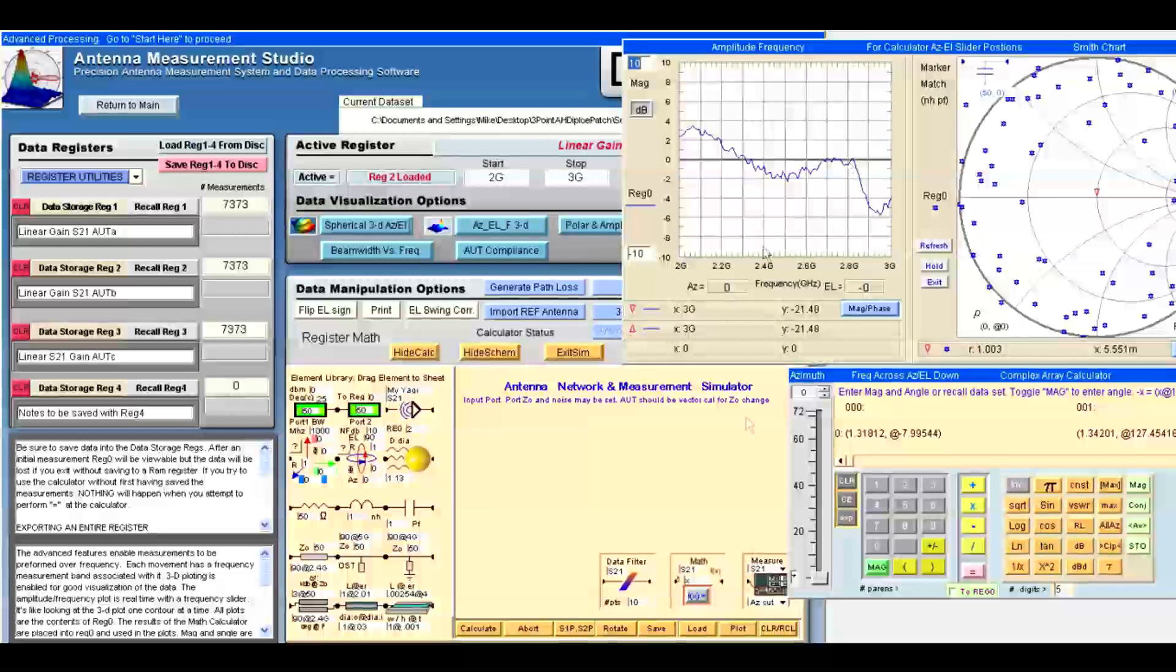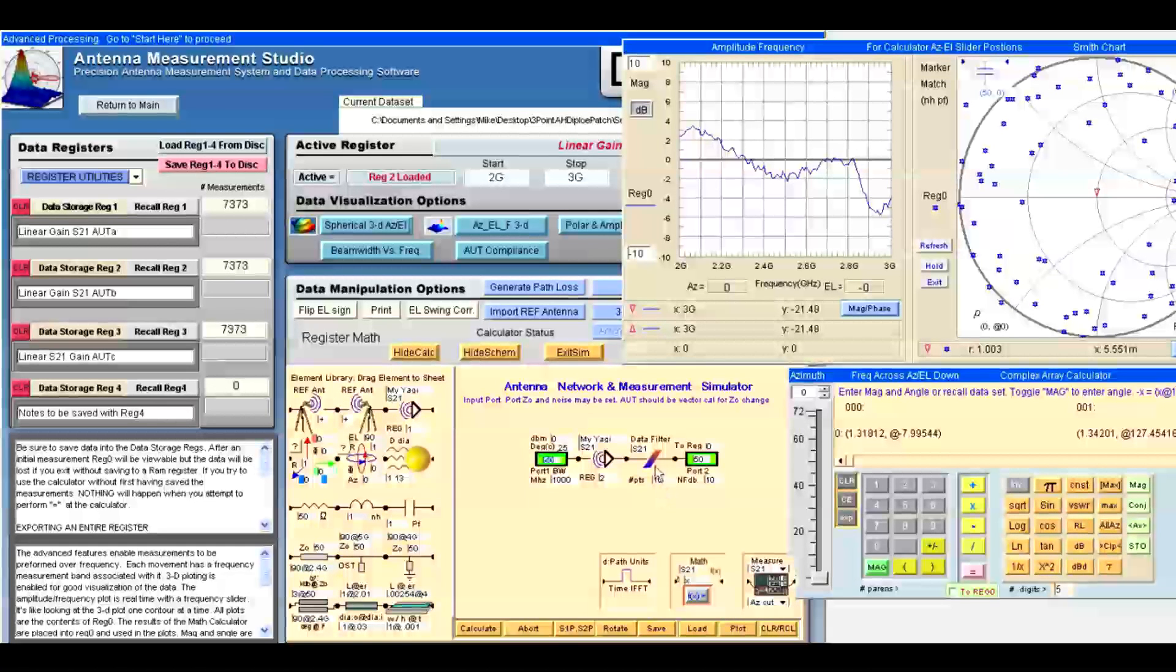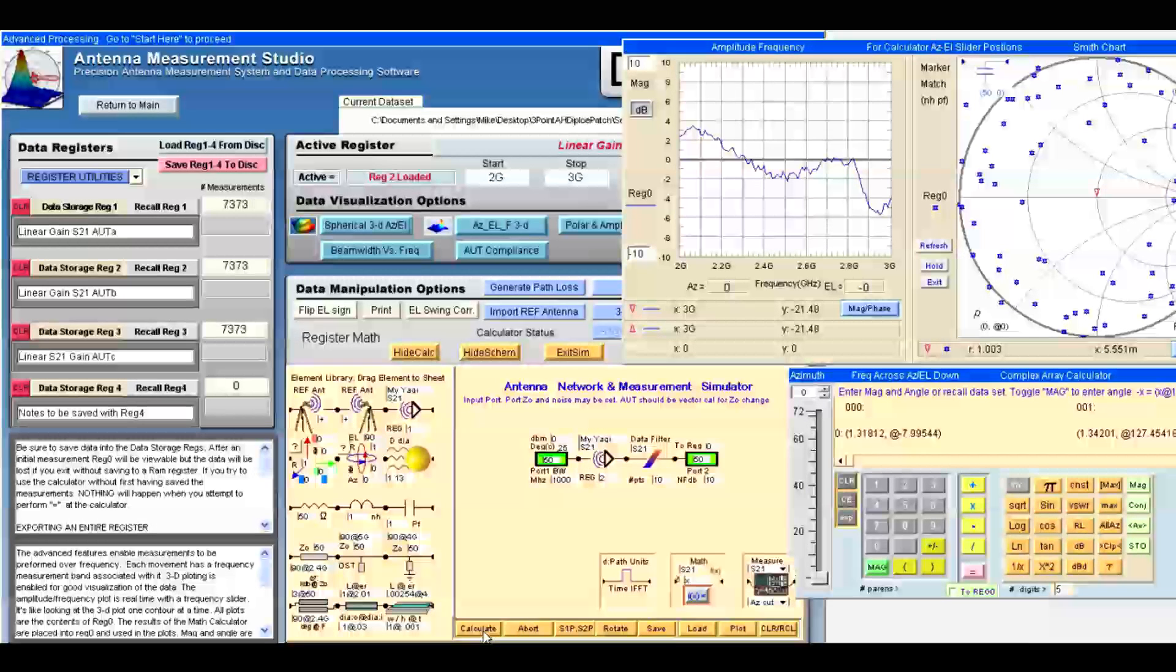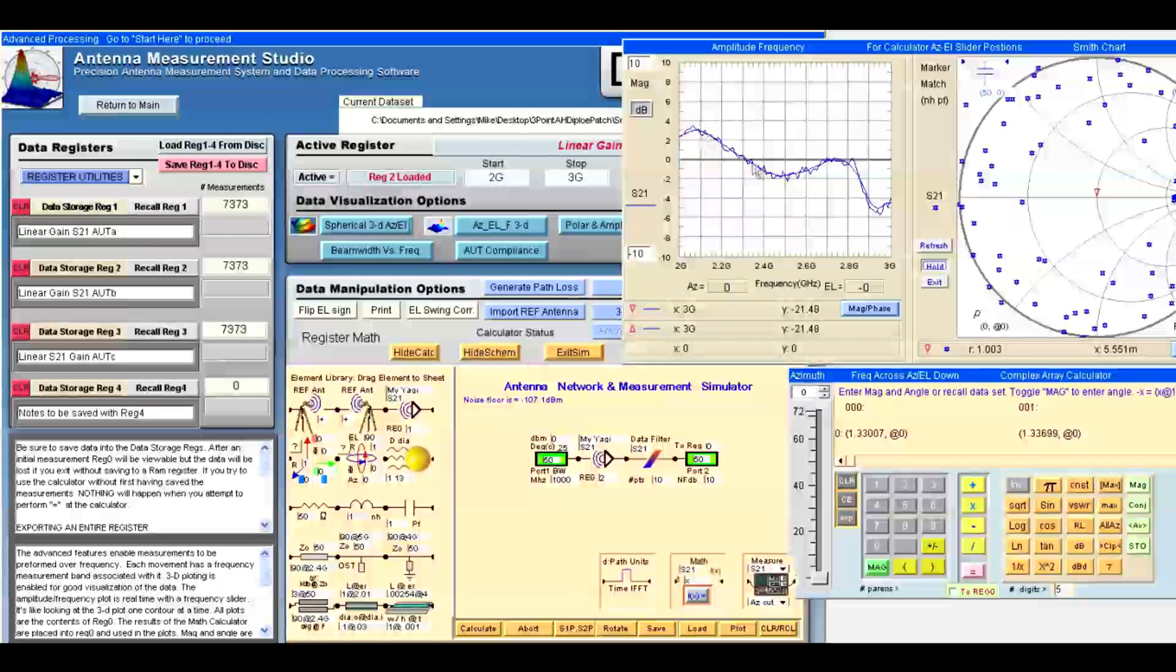This rippling can be removed by employing the data filter. The data filter with 10 points is usually sufficient for removing ripple. So, we're going to specify the dipole gain in register two and recalculate the gain and compare the two plots. As you can now see, the ripple has been effectively eliminated.